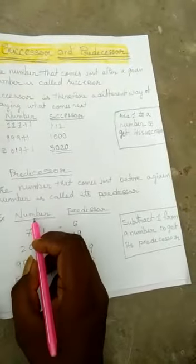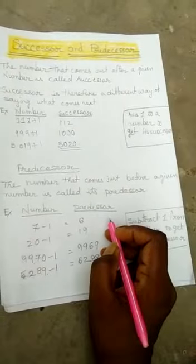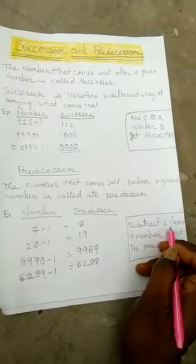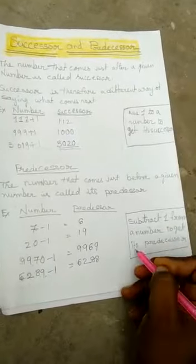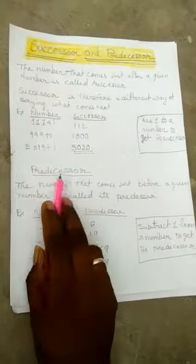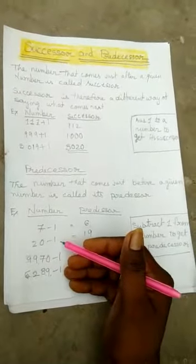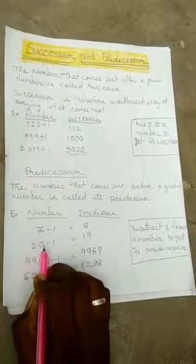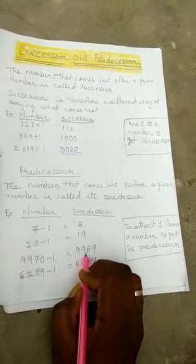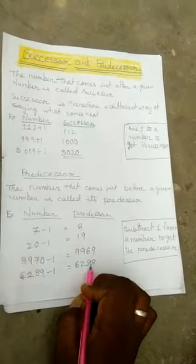To find the predecessor, we subtract 1 from the number. For example: 7 minus 1 equals 6 — so 6 is the predecessor of 7. Successor means after number; predecessor means before number — we subtract 1. So: 20 minus 1 is 19, 9970 minus 1 is 9969, and 6289 minus 1 is 6288.